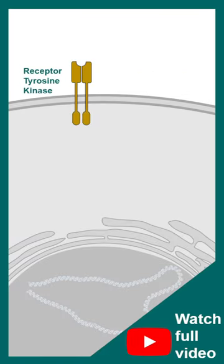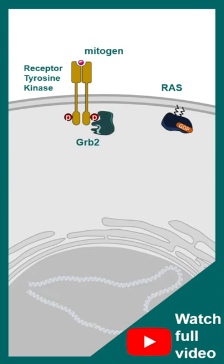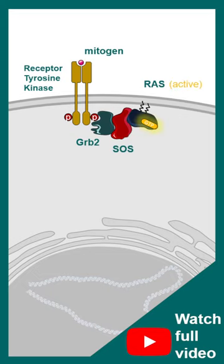The signaling begins when the ligand binds to the receptor tyrosine kinase, which leads to receptor phosphorylation. Several adapter molecules like GRB2 bind to these phosphotyrosine residues and recruit guanosine nucleotide exchange factors like SOS. Monomeric G proteins like RAS exchange their GTP to get activated.